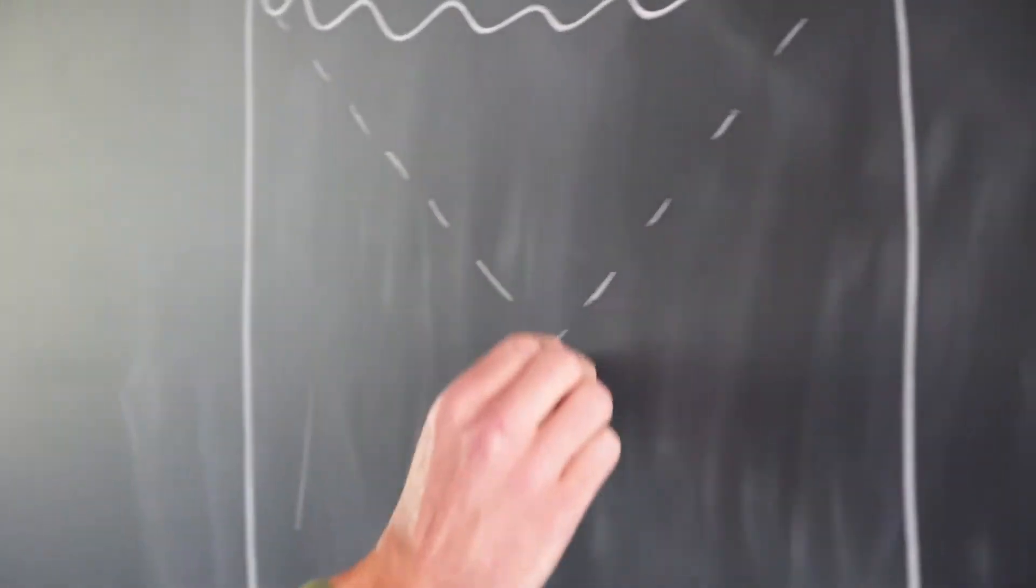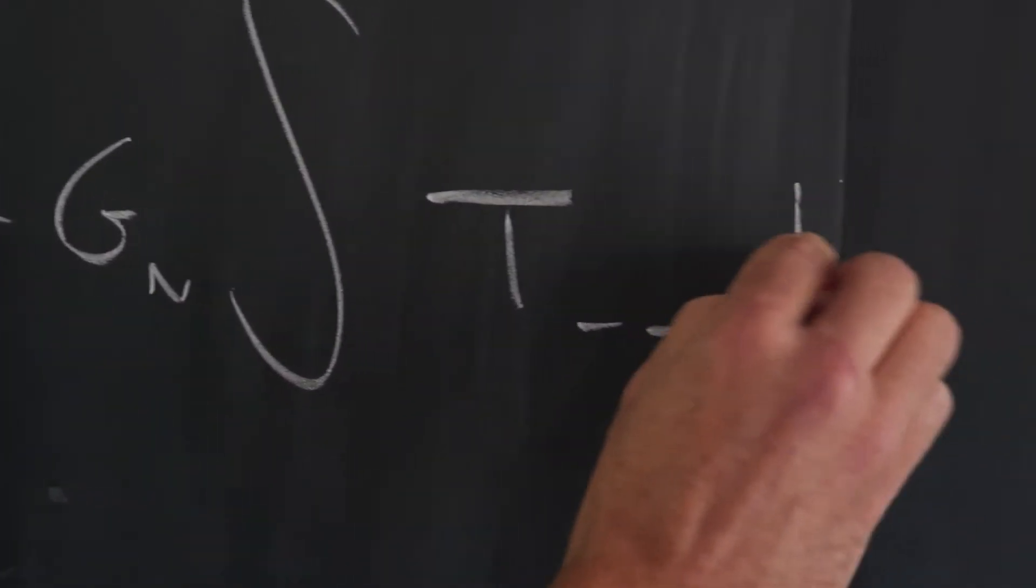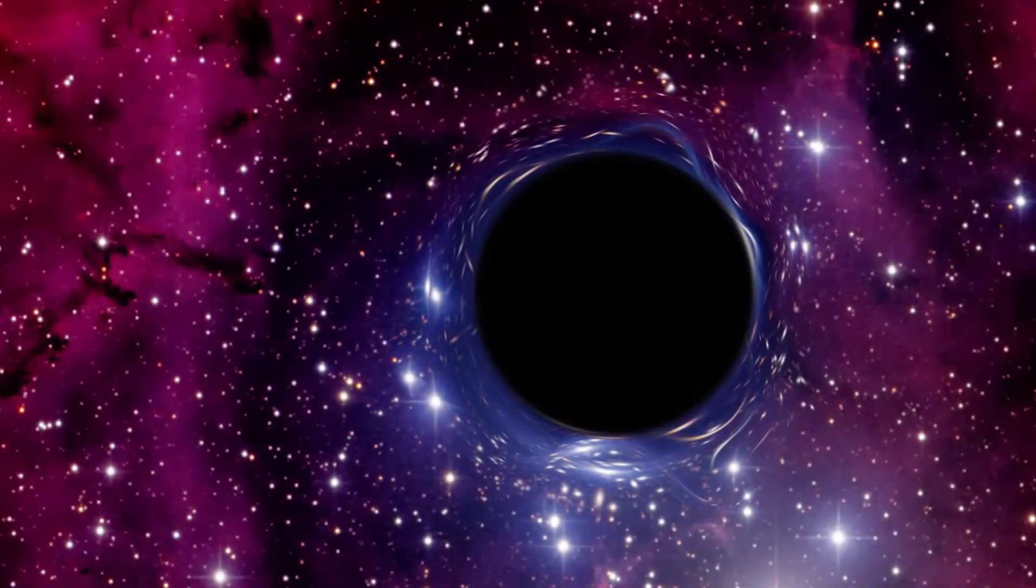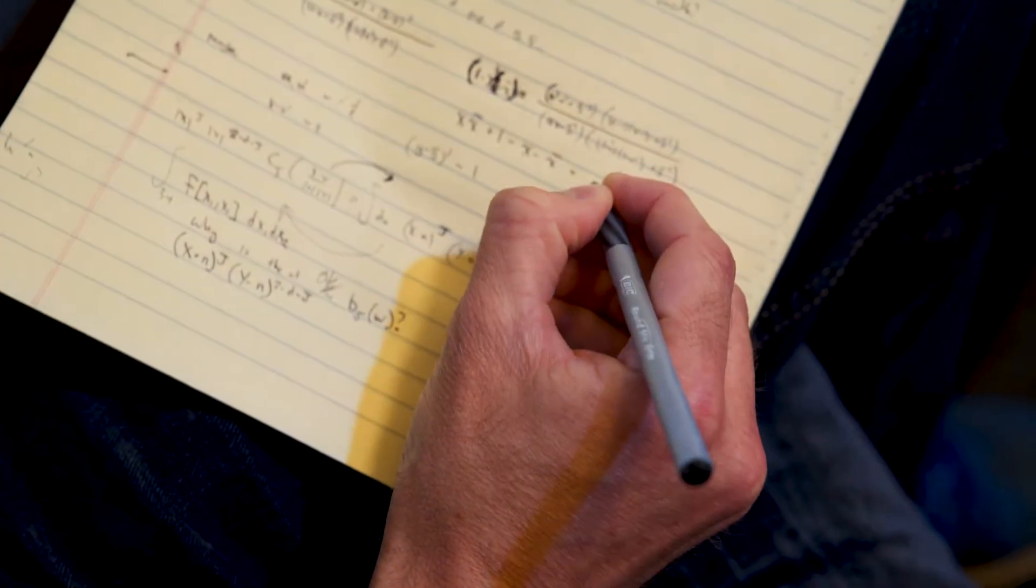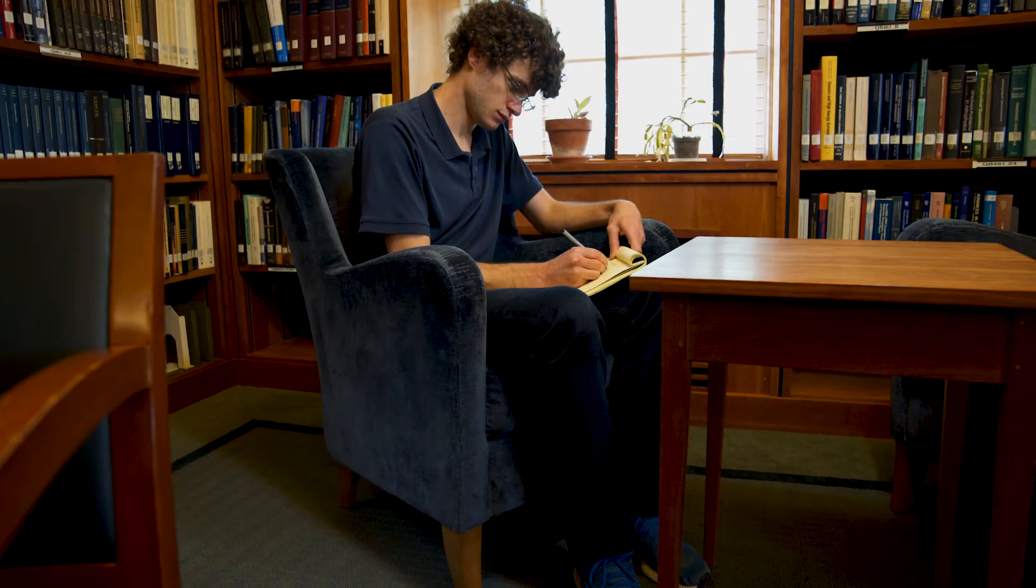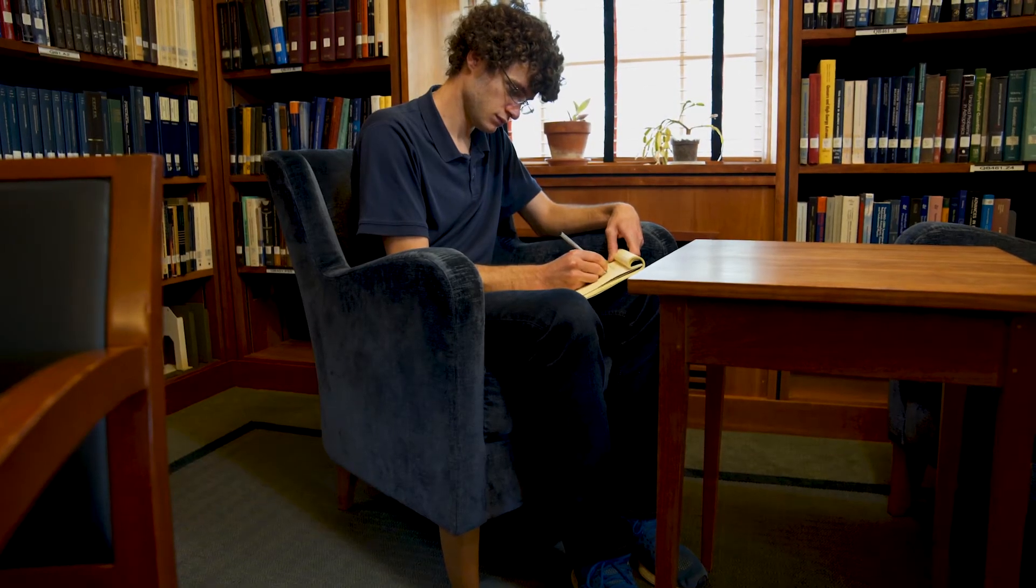Optimistically, I'd like to understand the solution to the black hole information problem. This is the question of what happens to information that falls into a black hole. How does it get out of the black hole? This is a big problem in high energy theoretical physics, but I hope that in the somewhat near future we'll understand that.